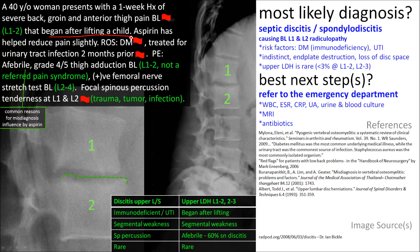The onset after lifting a child doesn't tell us much — it could or could not be a disc herniation. Aspirin reducing the pain slightly is also non-specific. However, the fact that she has diabetes mellitus and a recent urinary tract infection is very significant. In the context of suspected radiculopathy, when a patient has risk factors for immunodeficiency and signs of recent infection, you have to be concerned about discitis, abscess, or spondylodiscitis. Even though she's afebrile, only about half of discitis patients presenting with radiculopathy have a fever — and she's also taking aspirin, which could be lowering her temperature.